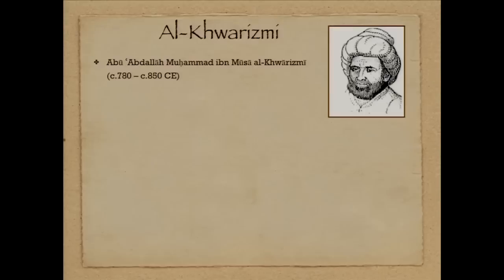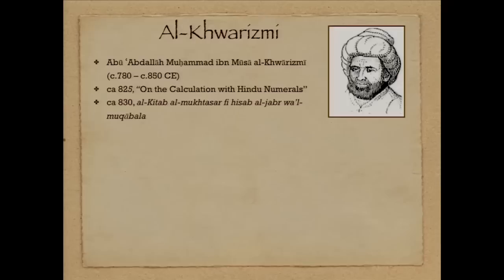There's a moderately reasonable attempt at the full name. This is around 800 current era. He wrote one book in about 1825 on the calculation with Hindu numerals — that was a book on arithmetic using Hindu-Arabic numerals. And then a few years later, he wrote this book. In the title of that book, you'll see that phrase 'algebra,' and that's where we get the word algebra from, because this was the world's first recognizable algebra book.